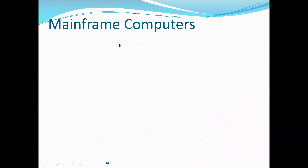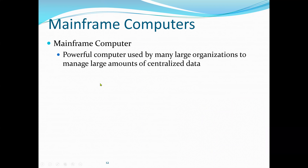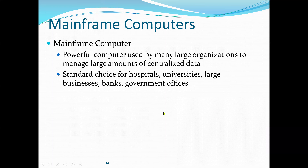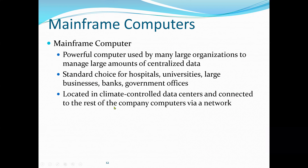Next are mainframe computers, which are larger than servers. Servers and mainframes perform similar tasks, but mainframes are more powerful, bigger, more expensive, and normally only large business organizations can afford to manage them. Mainframe computers are powerful computers used by many large organizations to manage large amounts of centralized data — for example, international firms, large hospitals with different departments, universities, large businesses, banks, and government offices. They are located in a climate-controlled data center connected to the rest of the company's computers through a network.